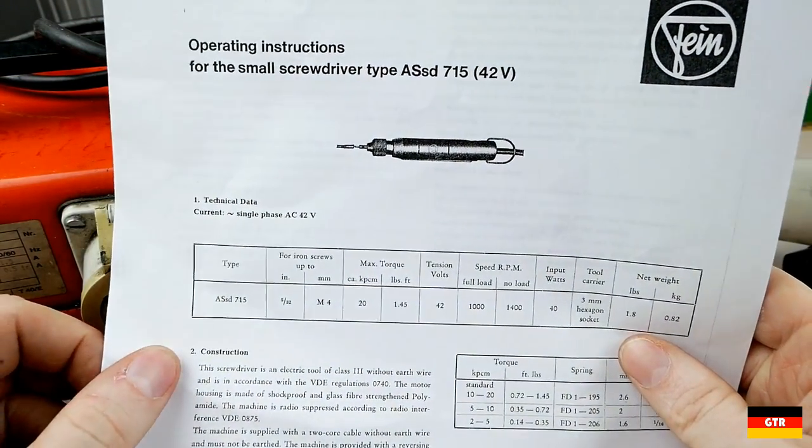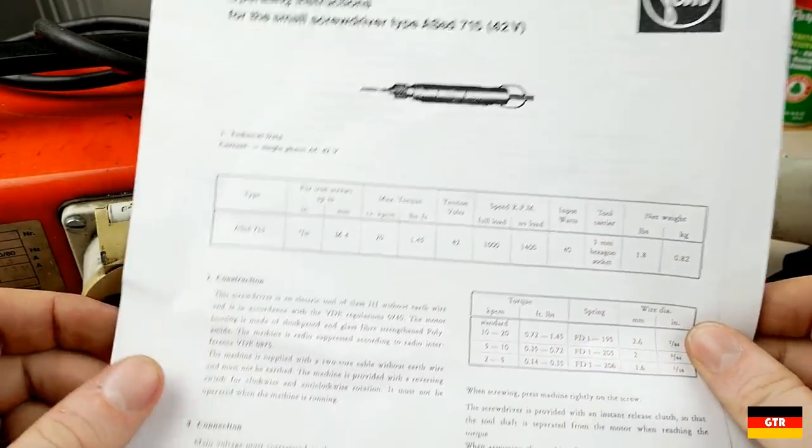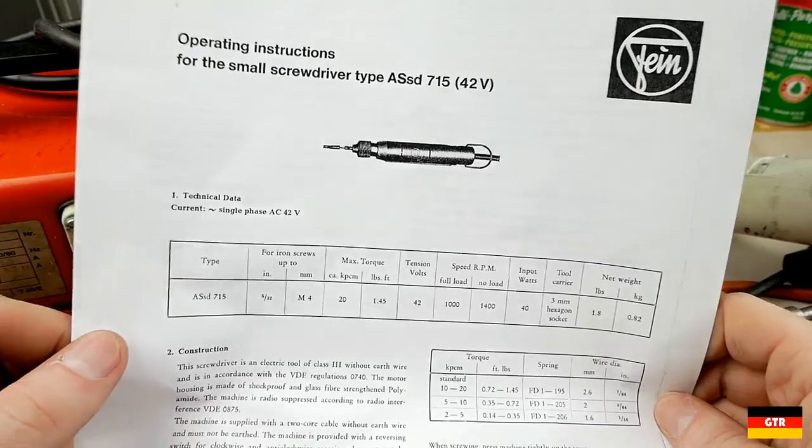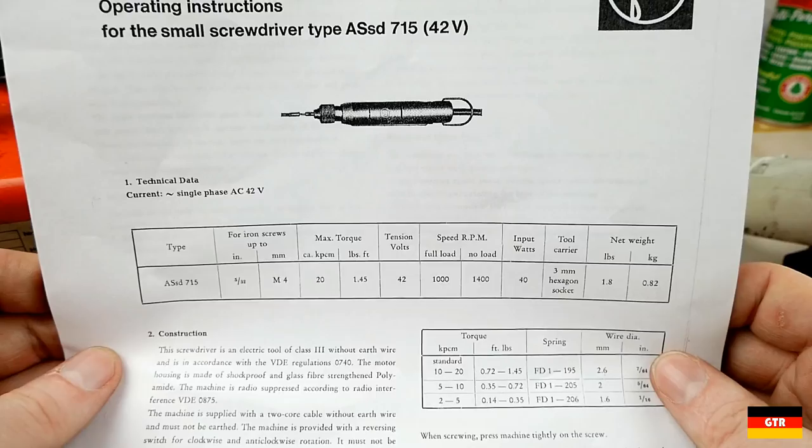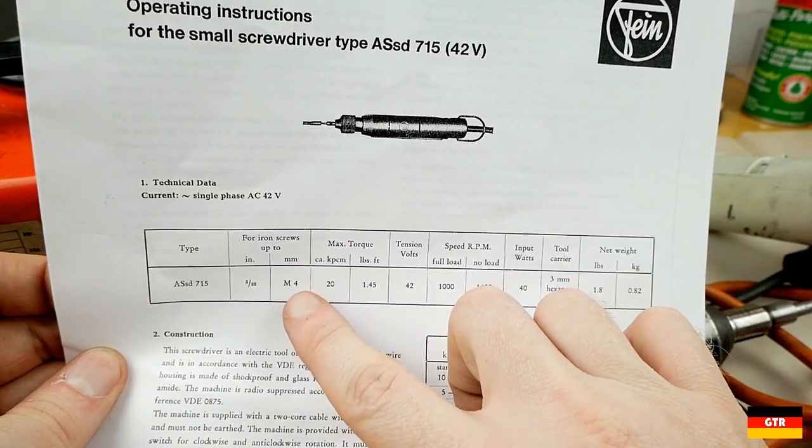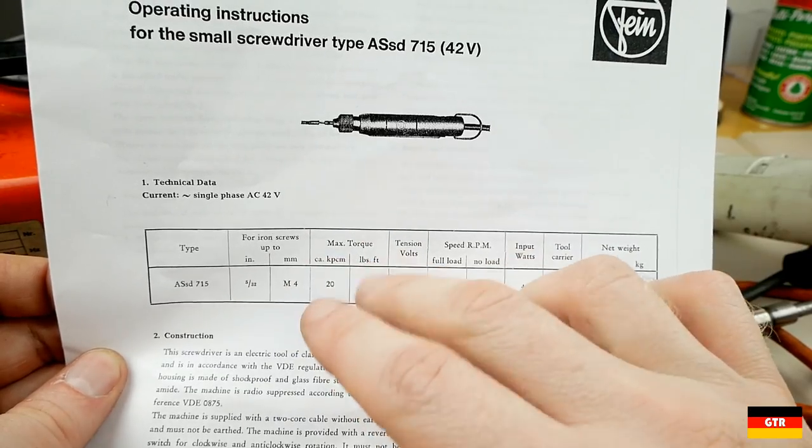If you remember when I got those Fein catalogs, I scanned in all of the service manuals and this was actually one of the ones that was in there. So we can take a quick look at the specs here. So up to iron screws, M4 or 5/32. Well that's a pretty tiny screw.